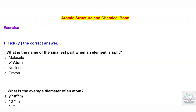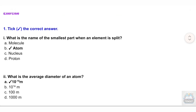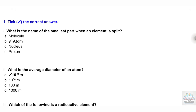Atomic Structure and Chemical Bond — Exercise 1. Tick the correct answer. Question 1: What is the name of the smallest part when an element is split? A. Molecule, B. Atom, C. Nucleus, D. Proton.